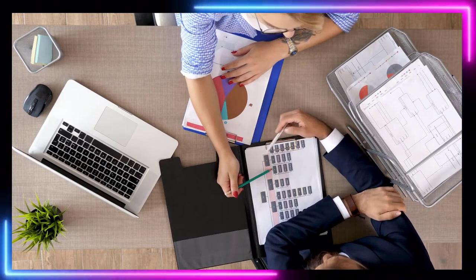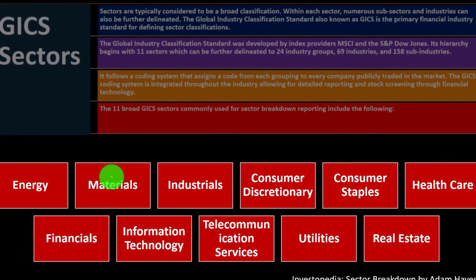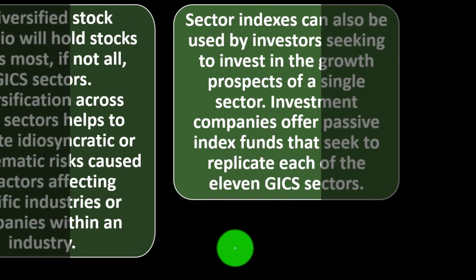A diversified stock portfolio will hold stocks across most if not all GICS sectors. Diversification across stock sectors helps to mitigate idiosyncratic or unsystematic risk caused by factors affecting specific industries or companies. If you're invested only in one area like materials, sector-specific factors could take it down without impacting others. However, broader events like a recession can take the whole market down, where bonds in your portfolio could help preserve your diversification.